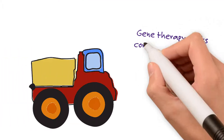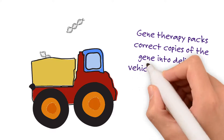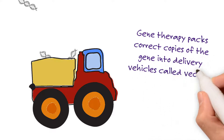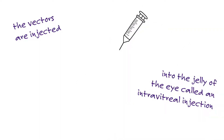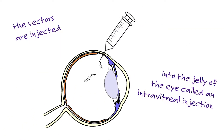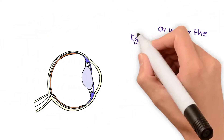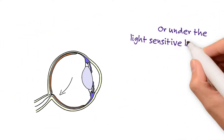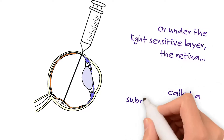Gene therapy packs correct copies of the gene into delivery vehicles called vectors. The vectors are injected into the jelly of the eye, called an intravitreal injection, or under the light-sensitive layer, the retina, called a subretinal injection.